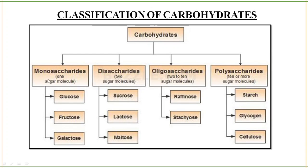The next class is disaccharides, which means two molecules of monosaccharides come together. Examples: sucrose, which is made up of glucose and fructose; lactose, made up of glucose and galactose; and maltose, made up of two units of glucose.